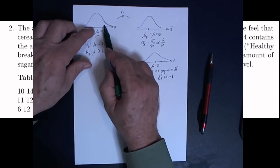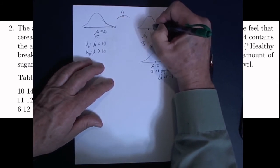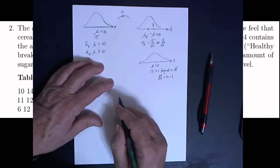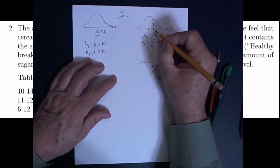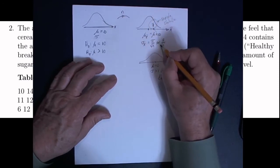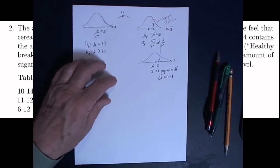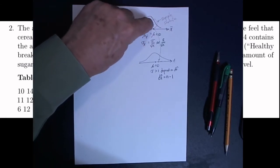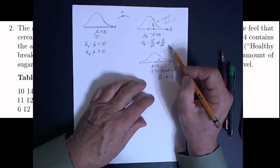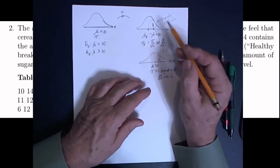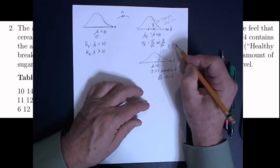We take a sample of a particular size n, get some value, and find the average of that sample, giving us an x-bar. That value is called the sample statistic. We're going to take that sample statistic and convert it to either a t-value or a z-value, depending on what kind of test we're doing. That conversion always works the same way: we count how many standard deviations this value is away from the mean, taking x-bar minus the mean of the distribution, then dividing by the standard deviation.